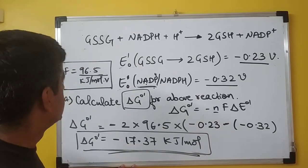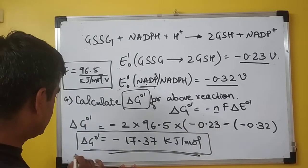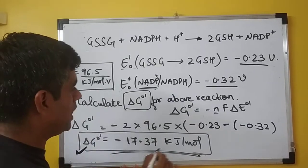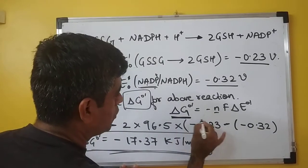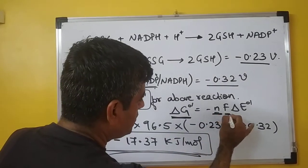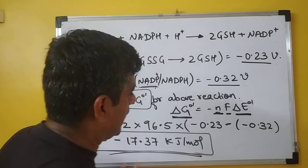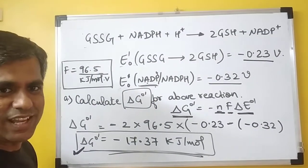So with this, you can calculate the value of ΔG₀'. Remember the formula: ΔG₀' = -nFΔE₀'. Stay tuned with us for more such questions. Thank you.